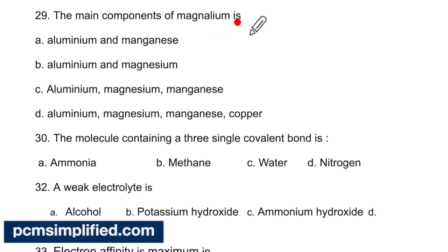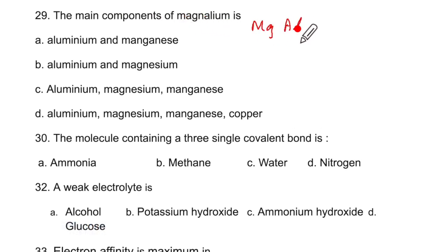The main components of magnalium are Mg and Al. The molecule containing three single covalent bonds is ammonia. Three single covalent bonds are here with this lone pair. Methane has four, water has two, nitrogen has a triple bond. So this is correct.